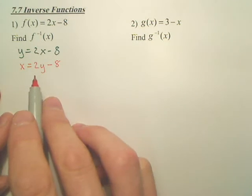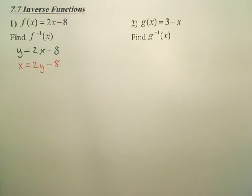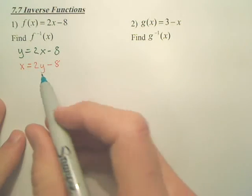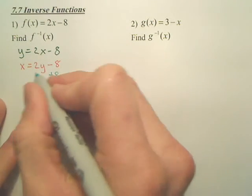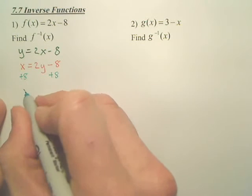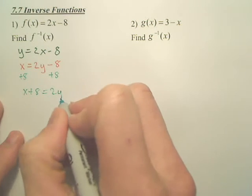Now, you've just got to simplify your inverse, so it's y equals. So, how do I get y by itself? Add the 8 over. So, I have x plus 8 equals 2y.